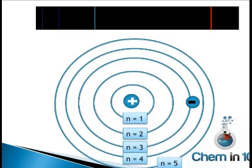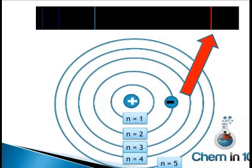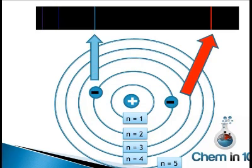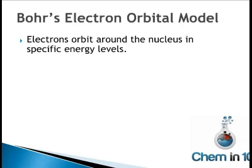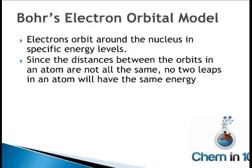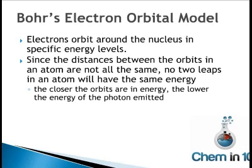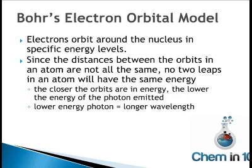For example, if one electron was in the third energy level and moved down to the second energy level, it would give off a photon of red light. If the electron were in n=4, the fourth energy level, and moved to the second energy level, it would give off aqua or turquoise light, which is a higher energy light. And if it moved an even greater distance between n=5 and n=2, it would give off blue light. Since the distances between the orbits in an atom are not all the same, no two leaps in an atom will have the same energy. The closer the orbits are in energy, the lower the energy of the photon emitted — a lower energy photon emits a longer wavelength light.